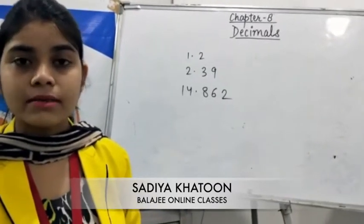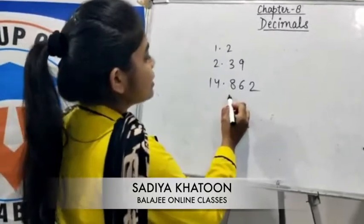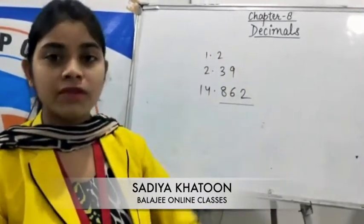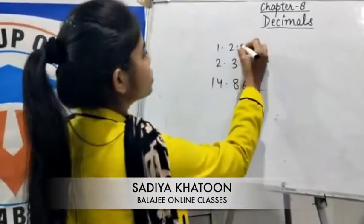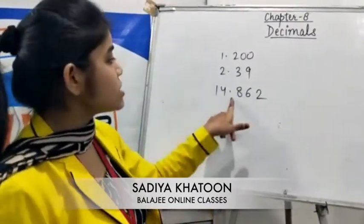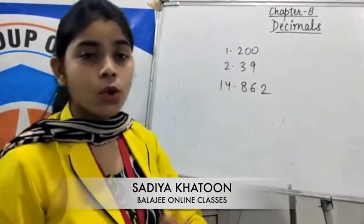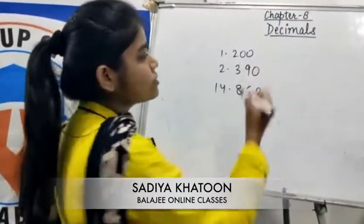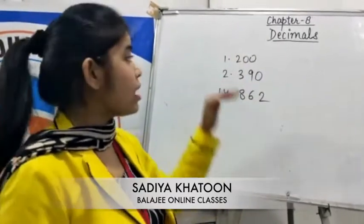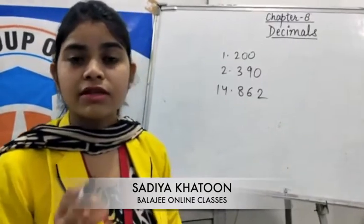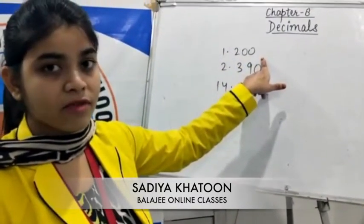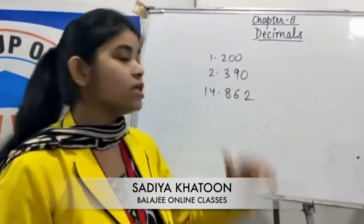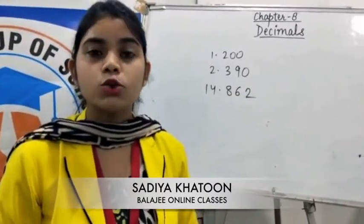To convert unlike decimals into like decimals, you find the one with the most decimal digits — here it is 3 — and make each number have 3 digits after the decimal. So you add 2 extra zeros to 1.2 to make it 1.200, and 1 zero to 2.39 to make it 2.390. Now all three numbers — 1.200, 2.390, and 14.862 — have 3 digits after the decimal, so they are like decimals.